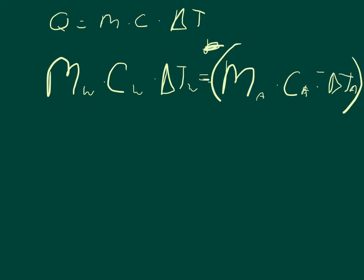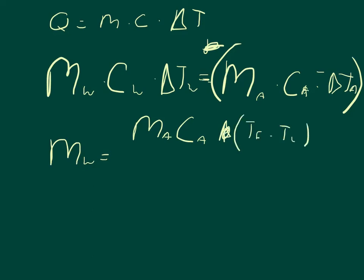My problem asks for the mass of water, so I need to solve for that. The mass of water equals the mass of aluminum times the specific heat of aluminum times negative (T final minus T initial) of aluminum, divided by the specific heat of water times the change in temperature of water. Distributing the negative sign through T final minus T initial gives us T initial minus T final, so: mass of aluminum times specific heat of aluminum times (T initial minus T final) of aluminum.